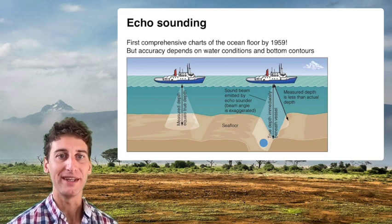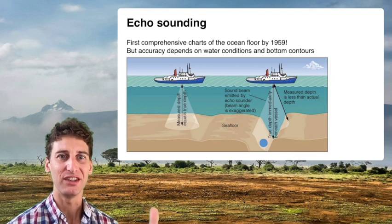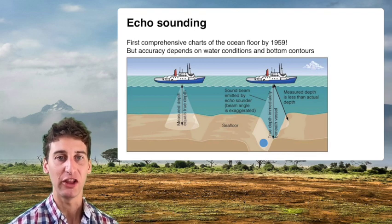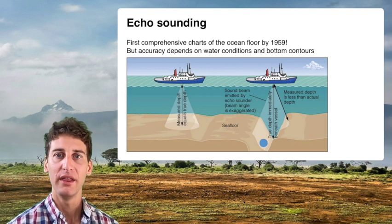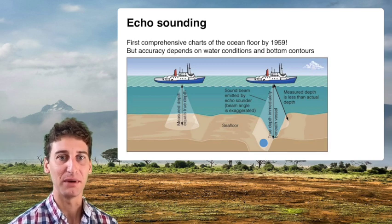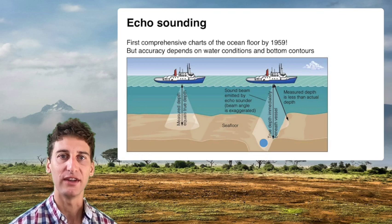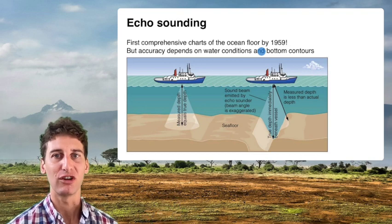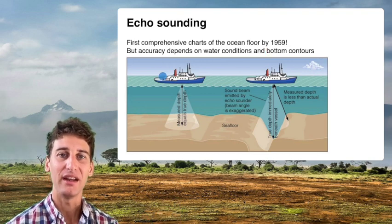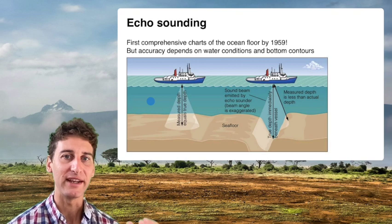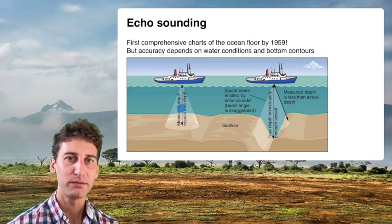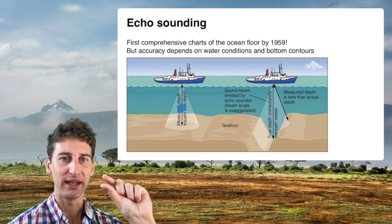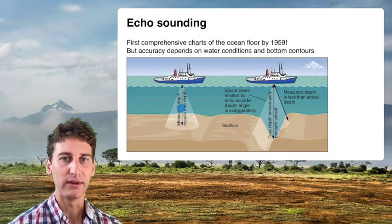Echo sounding became a really easy and relatively inexpensive way to know depths. Ships have a vested interest in knowing depth because you don't want to run aground on shallow reefs or harbors you're not familiar with. This technology was widely deployed and generated not just hundreds, not just thousands, but hundreds of thousands of data points for measuring ocean depths. This led to the development of the first comprehensive charts of the ocean floor by 1959. However, the sound beam spreads out as it goes down, so you're getting an average of what's beneath you rather than a single point on the ocean floor.